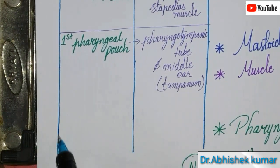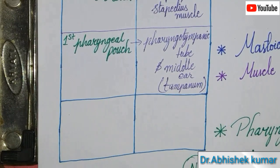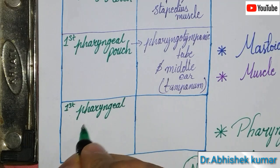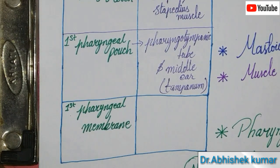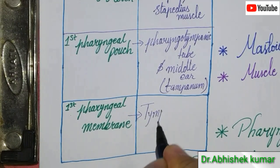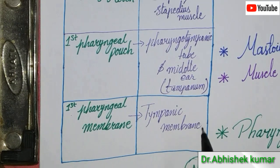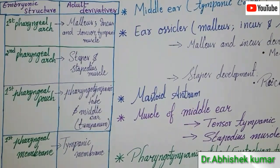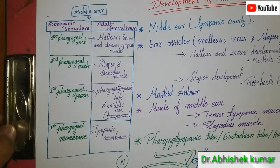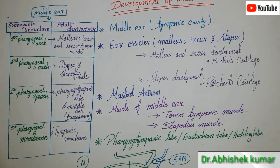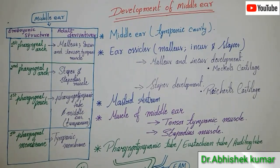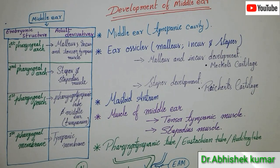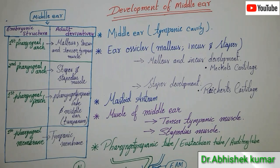The first pharyngeal membrane gives rise to the tympanic membrane. Quick summary of middle ear development: malleus and incus plus tensor tympani muscle come from the first pharyngeal arch; stapes and stapedius muscle come from the second pharyngeal arch; the first pharyngeal pouch gives rise to the pharyngotympanic tube and the middle ear (tympanum); and the first pharyngeal membrane gives rise to the tympanic membrane.